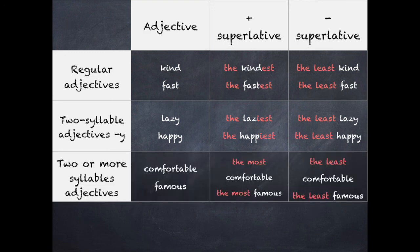The superlative negative form is the same: 'the least lazy' and 'the least happy'. For long adjectives with two or more syllables, like 'comfortable', we will use 'the most': 'the most comfortable', 'the most famous'. And for the negative superlative form, we will use 'the least comfortable' and 'the least famous'.